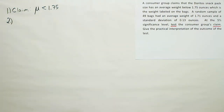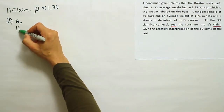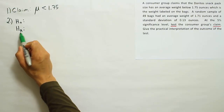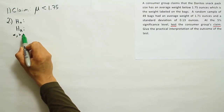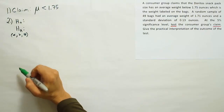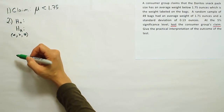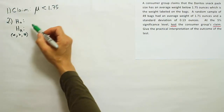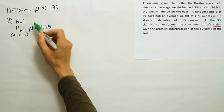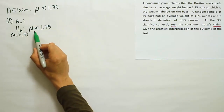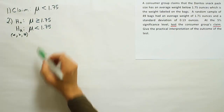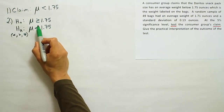Step two is to identify H0 and HA — our competing pair of hypotheses. HA uses three symbols: less than, greater than, or not equal to. If the claim has any of those three symbols, the claim and HA will be the same. Our claim has less than, so the claim and HA are the same here. To get H0, we take the complement: the mean is less than 1.75, so the opposite is greater than or equal to 1.75. Notice H0 has an equal sign, which it's supposed to have.